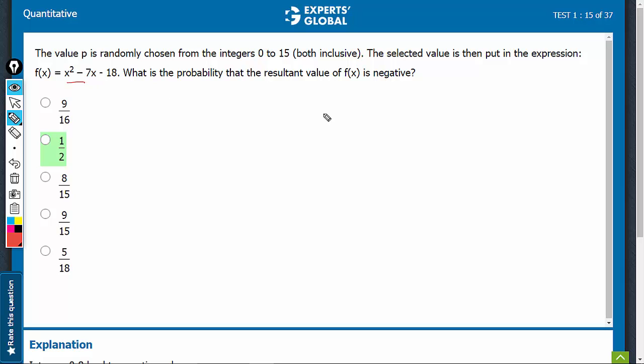So, let's factorize this first. This can be written as x square minus 9x plus 2x minus 18, which is x minus 9 into x plus 2.